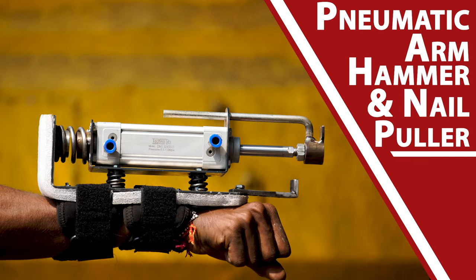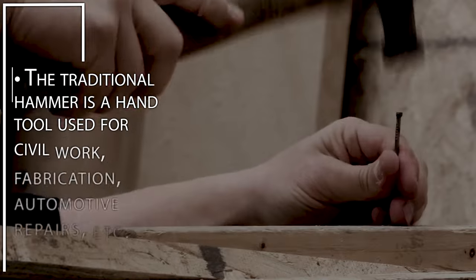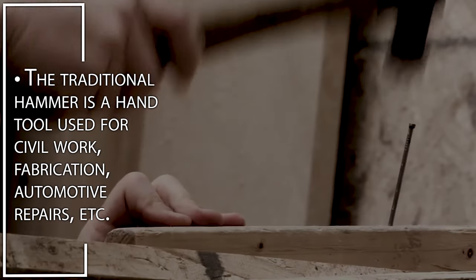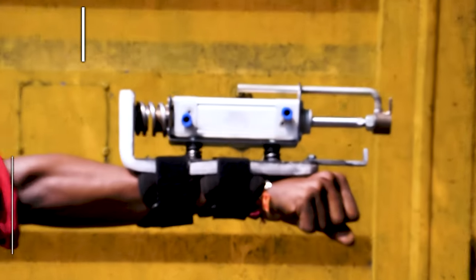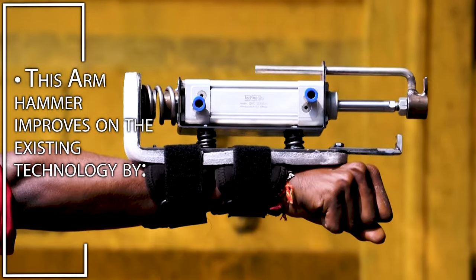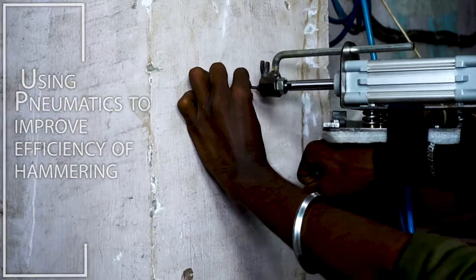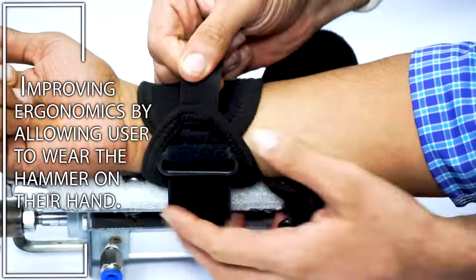Pneumatic Arm Hammer and Nail Puller. The traditional hammer is a hand tool used for civil work, fabrication, automotive repairs, etc. This arm hammer improves on existing technology by using pneumatics to improve efficiency of hammering and improving ergonomics by allowing the user to wear the hammer on their hand.